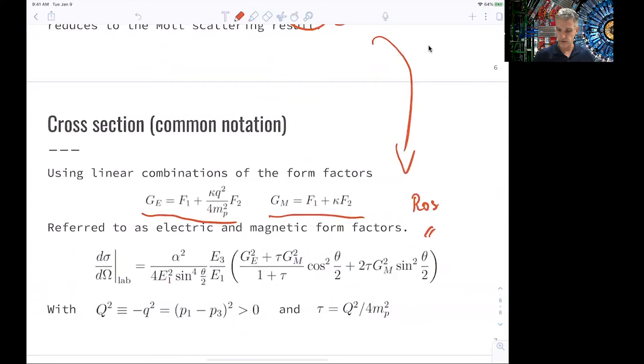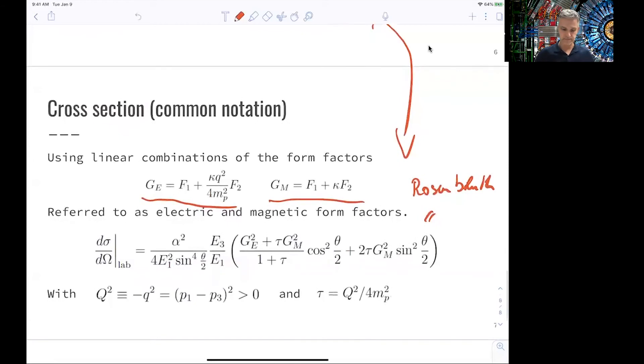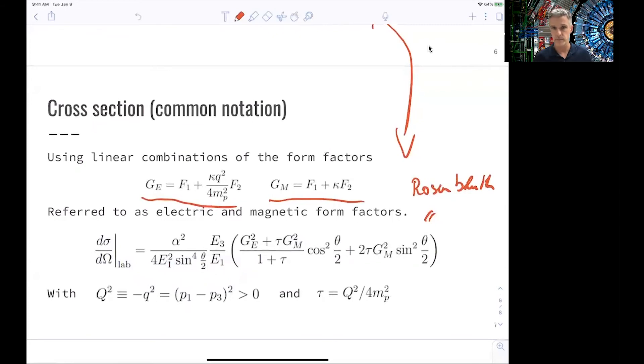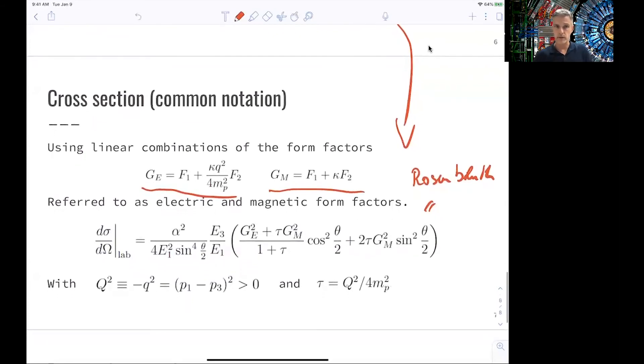If you find this in particle physics booklets or nuclear physics booklets, this is what's meant by this. The only thing we did here is extended the Mott scattering formula using extended objects, extended charge distribution, to the Rosenbluth formula.